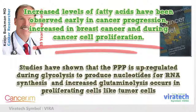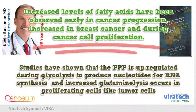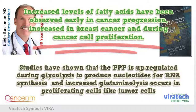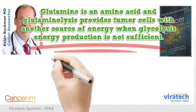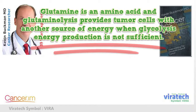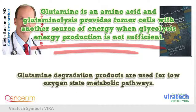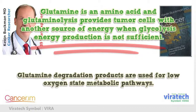Studies have shown that the pentose phosphate pathway (PPP) is upregulated during glycolysis to produce nucleotides for RNA synthesis, and increased glutaminolysis occurs in proliferating cells like tumor cells. Glutamine is an amino acid, and glutaminolysis provides tumor cells with another source of energy when glycolysis energy production is not sufficient. Glutamine degradation products are used for low oxygen state metabolic pathways.